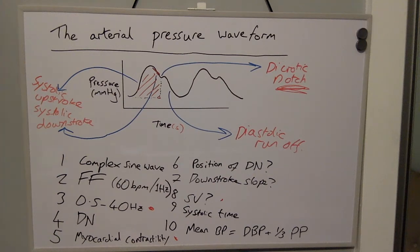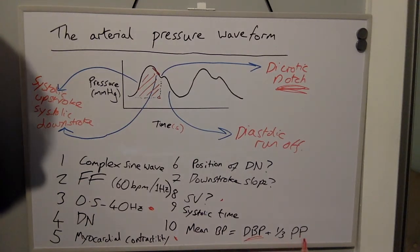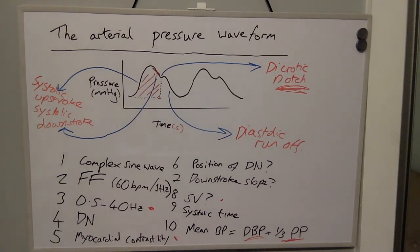Mean blood pressure is the average blood pressure throughout the cycle. The MAP would be equal to the diastolic blood pressure plus one third of the pulse pressure. The pulse pressure is the systolic blood pressure minus the diastolic blood pressure.